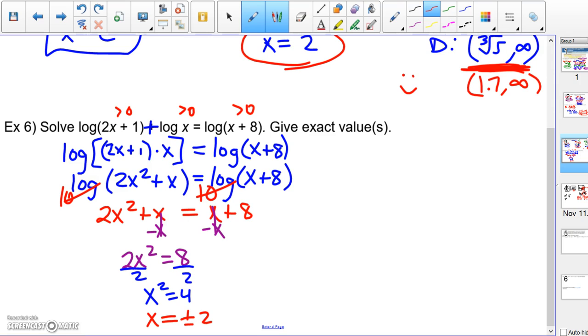We have to make sure that none of those numbers, neither of those two answers, would give me a negative value in my log. And so remember back up here at the top when we said those things have to be greater than zero. 2x plus one must be greater than zero. So if you subtract one and divide by two, x must be greater than negative one half. So you can already tell negative two is not going to work. But let's go ahead and do the others. x is greater than zero. And x plus eight is greater than zero. So x must be greater than negative eight.